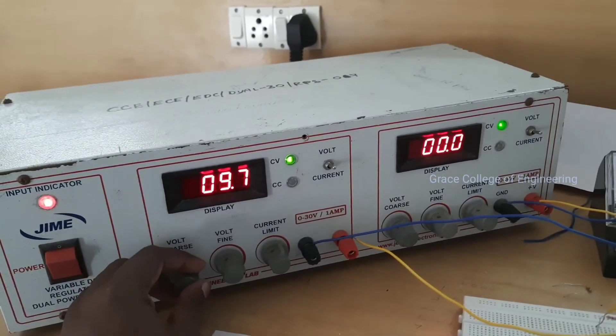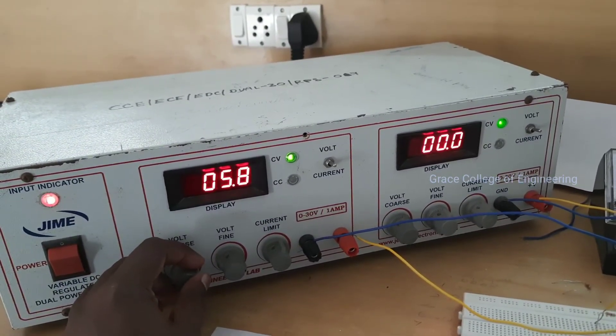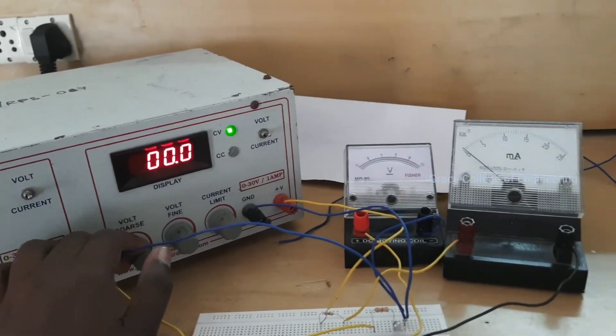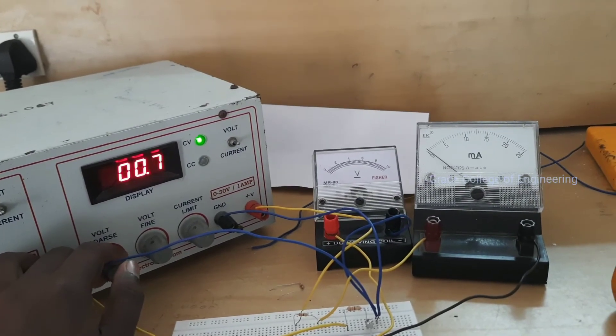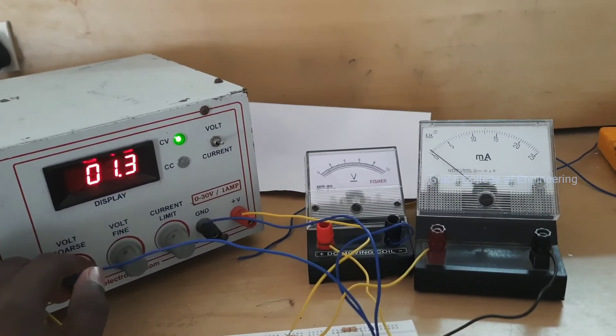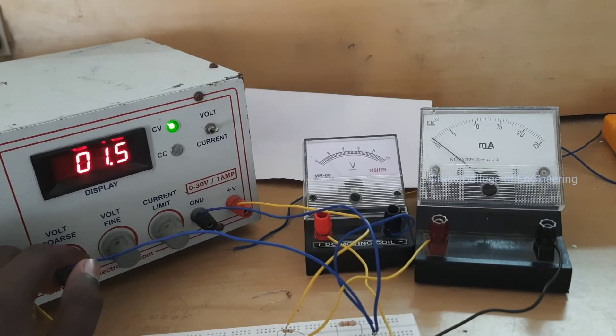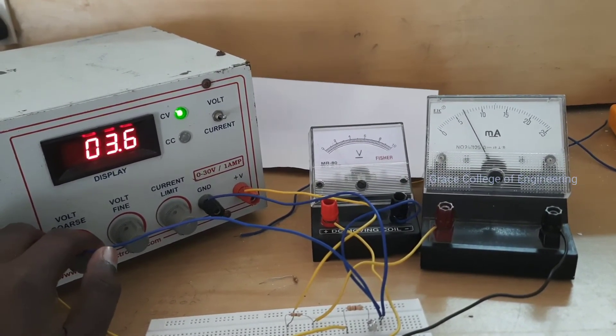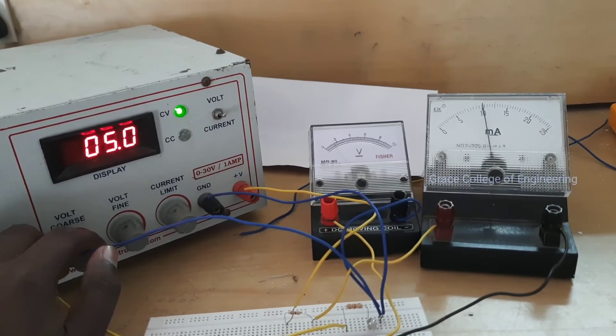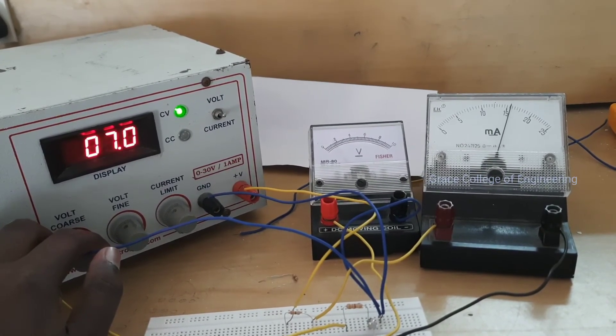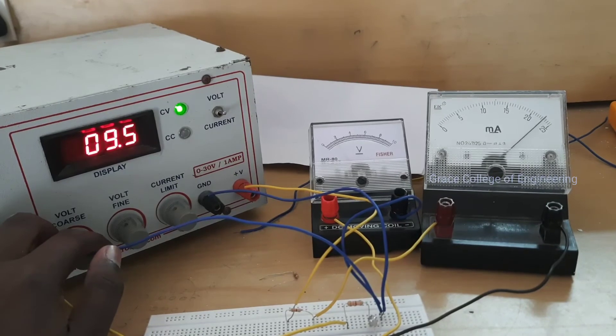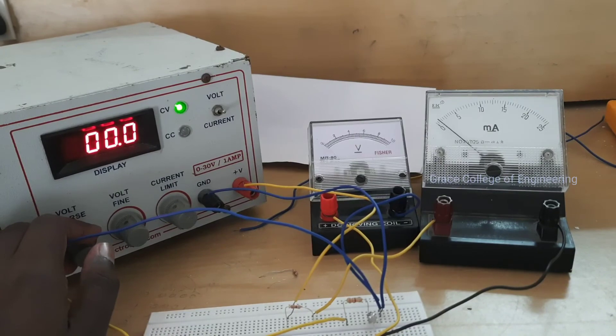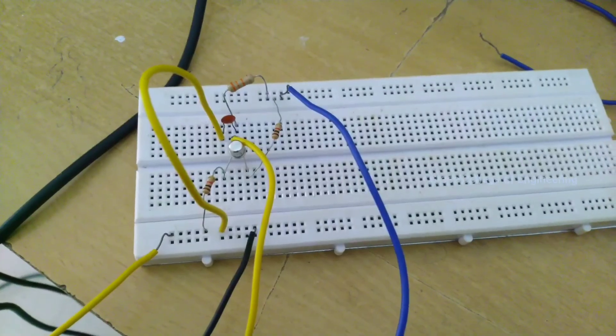This is the UJT characteristics measurement. Base 1 and base 2 are connected. We plot the current versus voltage and the corresponding current values. Various values of base 1 and base 2 voltage are set constant, and emitter base voltage is varied to measure the corresponding emitter current.